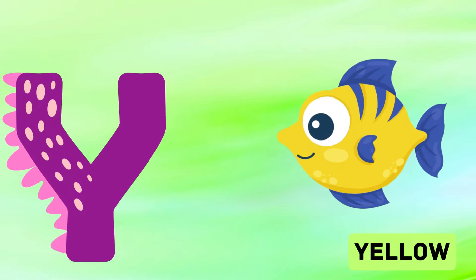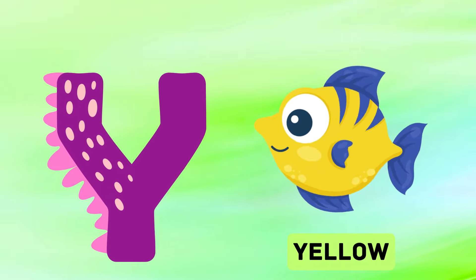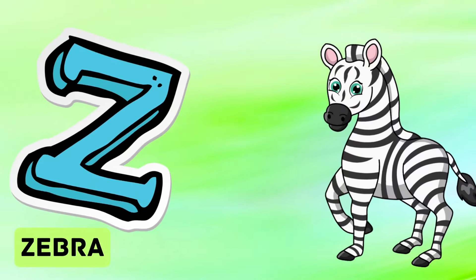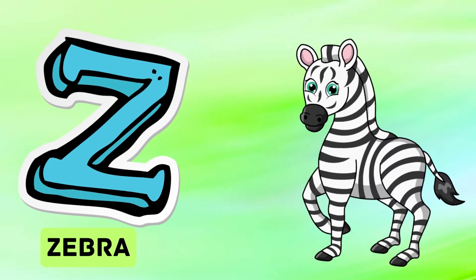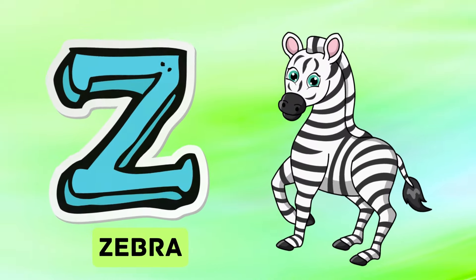Y is for yellow, ye-ye-yellow. Z is for zebra, z-z-zebra.